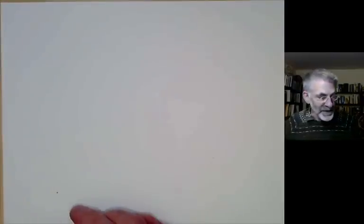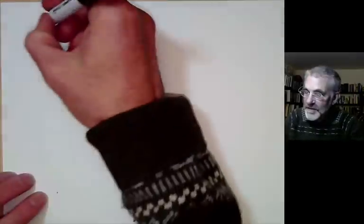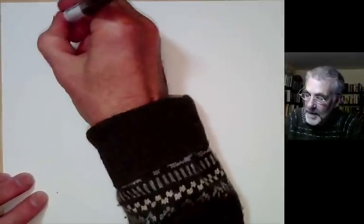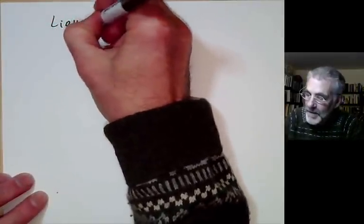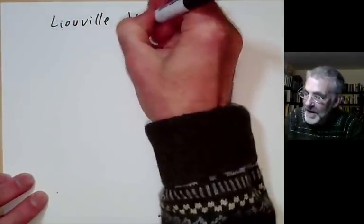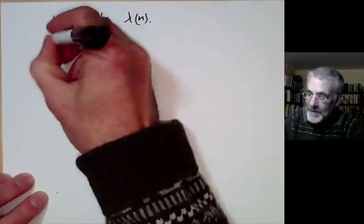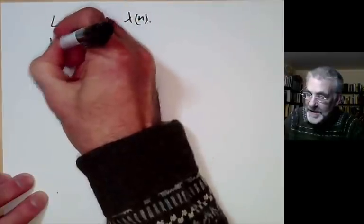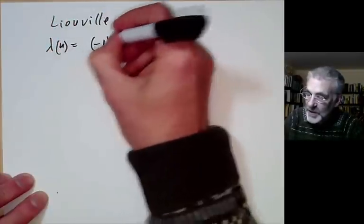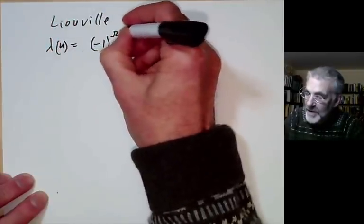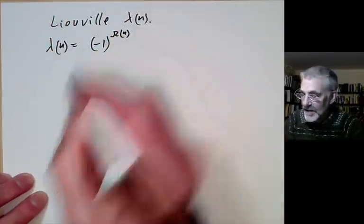Dirichlet characters are strictly multiplicative and they also take values that are complex numbers of absolute value 1. Another example of a strictly multiplicative function is the Liouville function, sometimes denoted by λ(n). λ(n) is defined as equal to (−1) to the power of Ω(n).